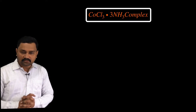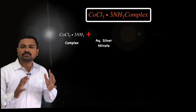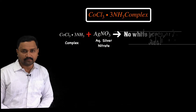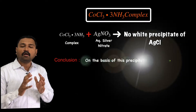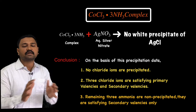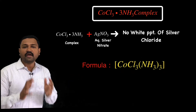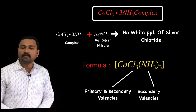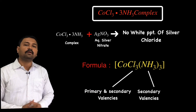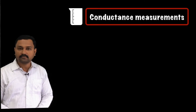The last complex is CoCl₃·3NH₃. When treated with aqueous silver nitrate, no precipitate is obtained. Werner concluded that all three chloride ions and all three ammonia molecules satisfy secondary valency. He formulated this complex as [Co(NH₃)₃Cl₃] with everything inside the coordination sphere. These are the experimental evidences Werner provided on the basis of precipitation data for the various cobalt amine chloride complexes.